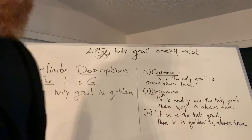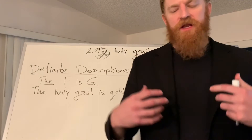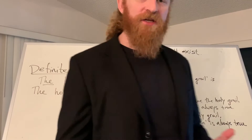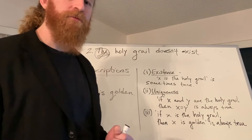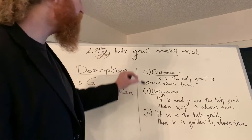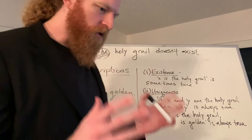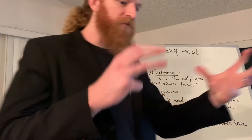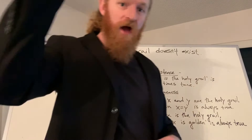To find the logical form of a statement, we need to find its truth conditions — that is, what are the conditions that would make the statement true? Russell thinks he finds three conditions on the truth of a definite description statement such as 'the F is G' — the Holy Grail is golden in our example. First is the existence condition: one thing you're positing when you say 'the Holy Grail is golden' is that there is a Holy Grail. In Russell's terminology, this is an existential quantifier — the propositional function 'X is the Holy Grail' is sometimes true. If we go through the domain of objects and plug them in for X, at some point we'll come upon the object of which it's true to say that it is the Holy Grail.